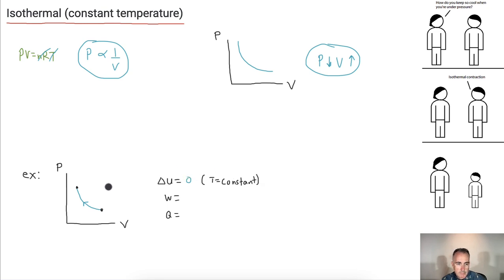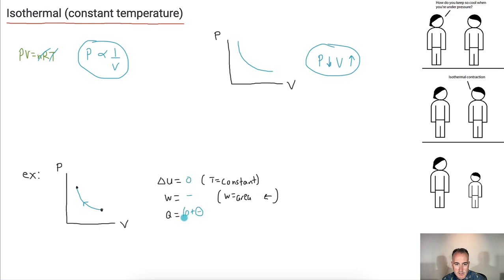What about W? In this particular case, the process goes to the left, so W equals the area, but because it goes to the left, the work done by the system is negative. Therefore, zero plus negative gives Q equals negative.